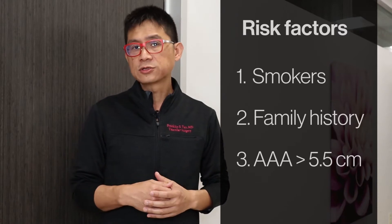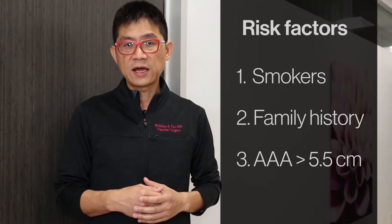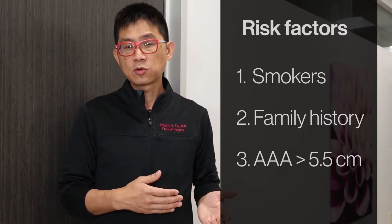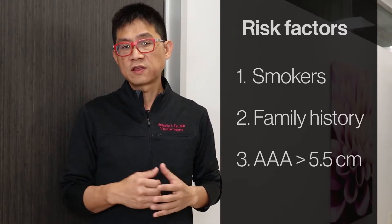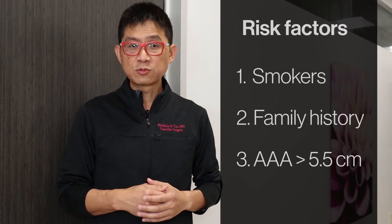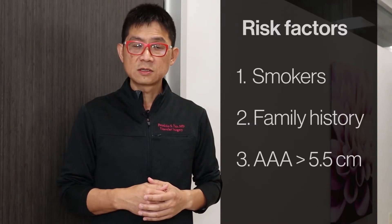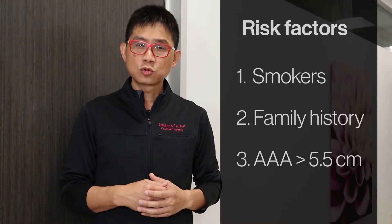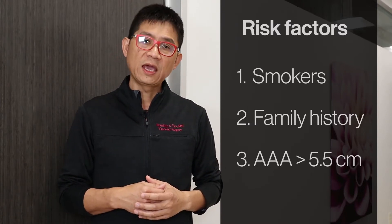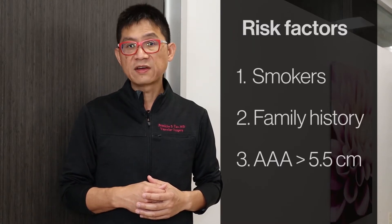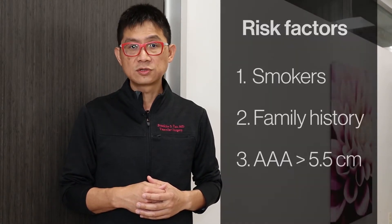A normal aorta is about 2 cm in diameter. As the aneurysm grows to larger than 5 cm, the risk of rupture increases. We usually recommend surgical treatment when the aneurysm has grown to about 5.5 cm.